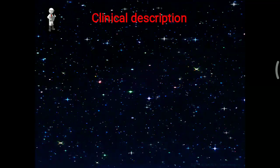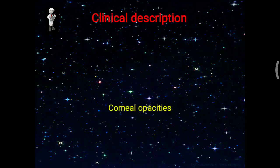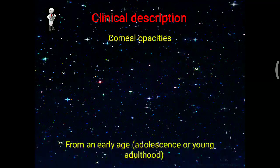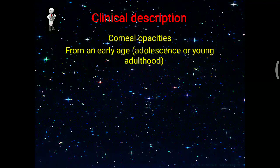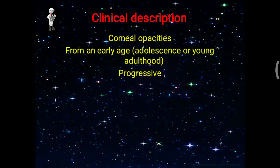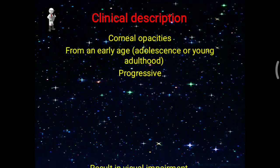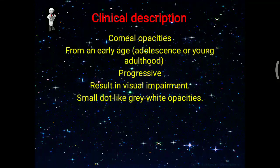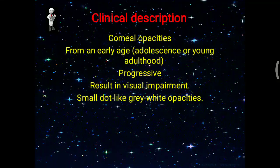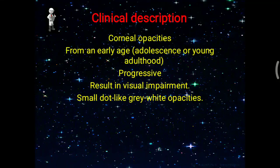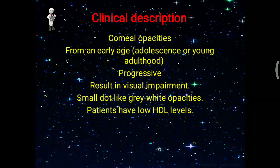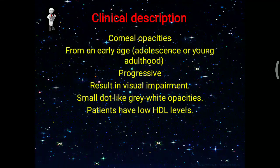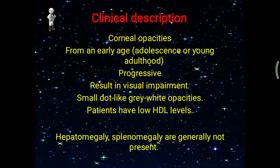In terms of clinical presentation, corneal opacities are seen from an early age, typically in young adulthood. If progressive, it results in visual impairment. Small dot-like grey-white opacities are seen in the cornea. Patients have low HDL levels because cholesterol is not being transferred from peripheral tissue to HDL.